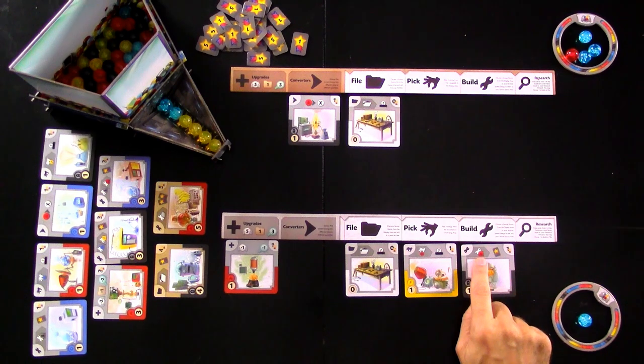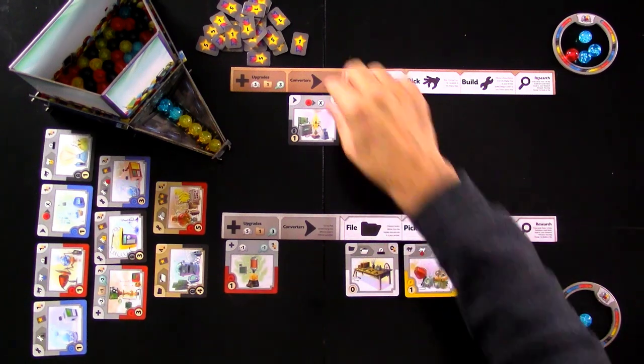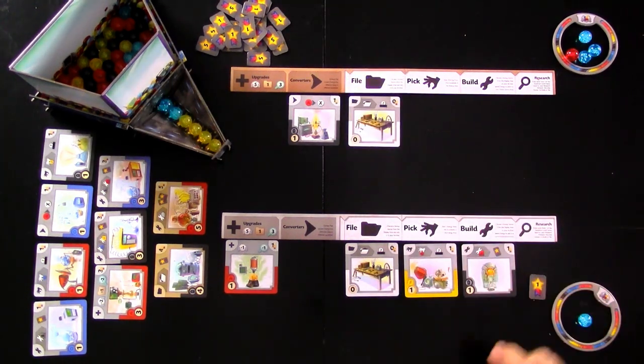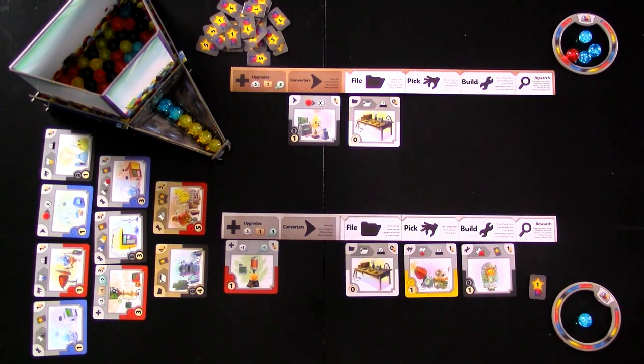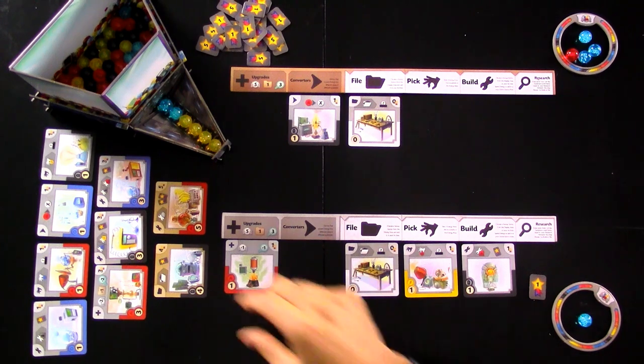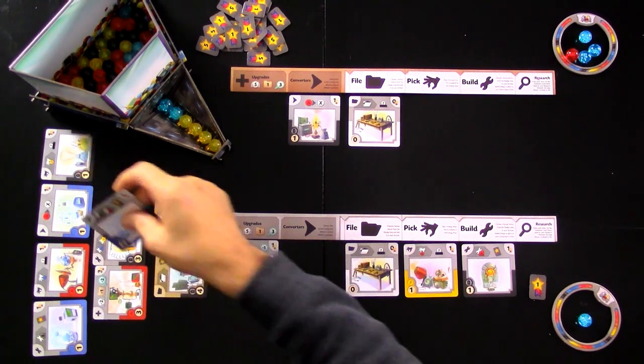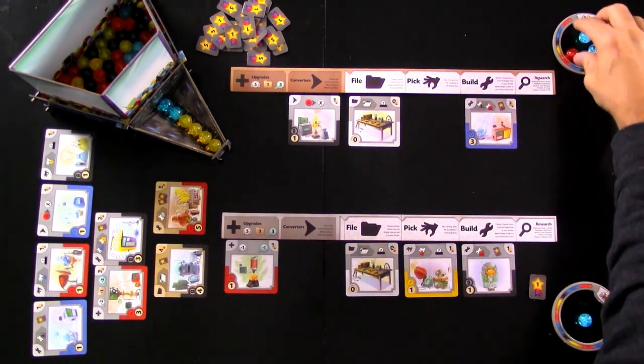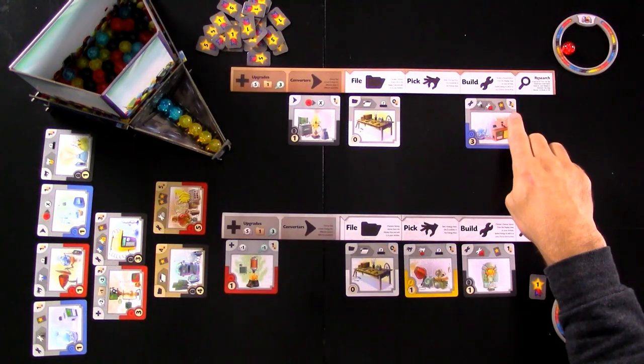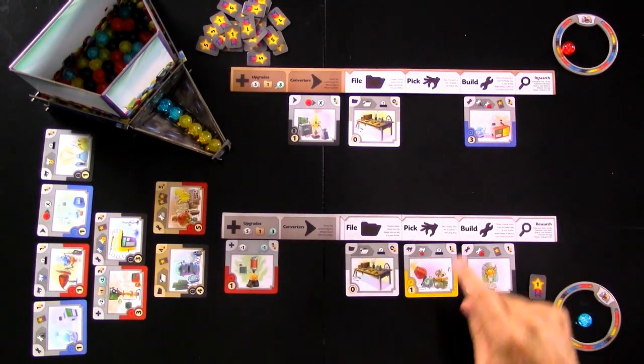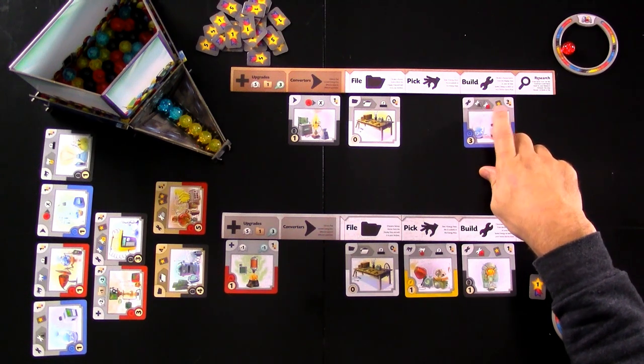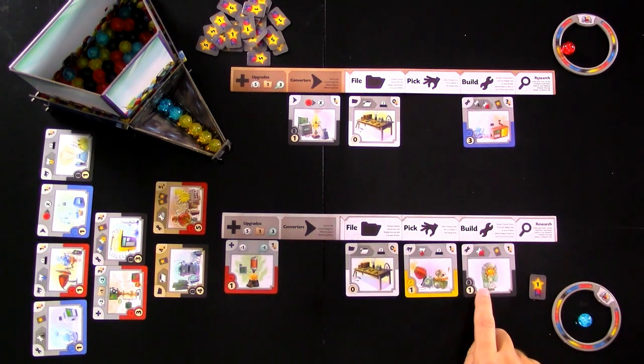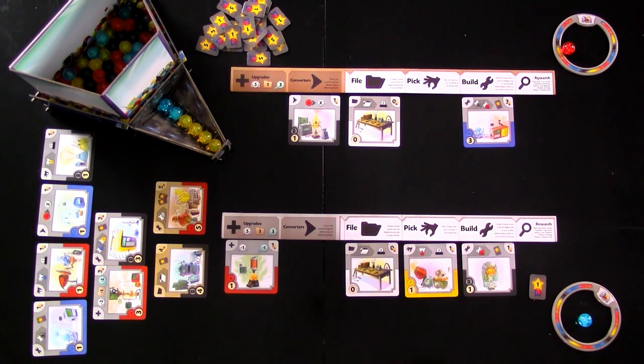And because she built a red gizmo, she gets an extra victory point. So right now, Jen is in the lead. One, two, three, four points versus my measly one point. But I'm saving up for the big show. And here it comes. I am going to build my blue thing here with these three blue marbles. It took a while. And there. Boom. We're tied up. I've got four points. And from now on, if I ever build a black or red gizmo, I score victory points. So this is much more powerful than Jen's. So I definitely now want to focus on building black or red gizmos.